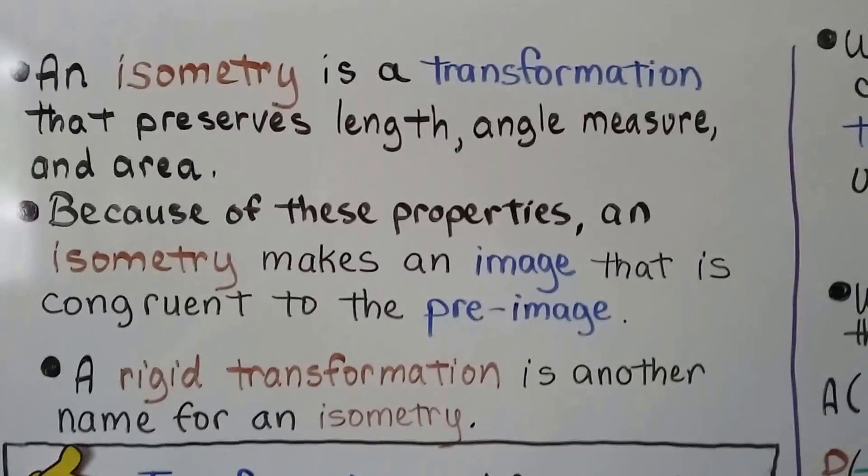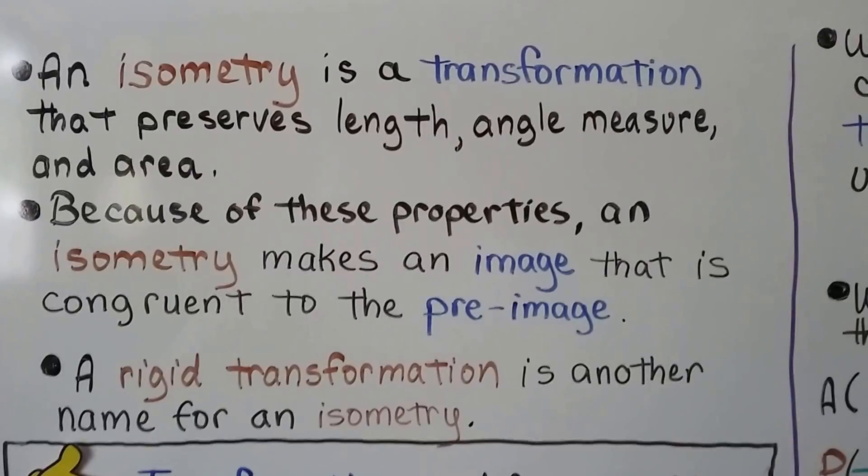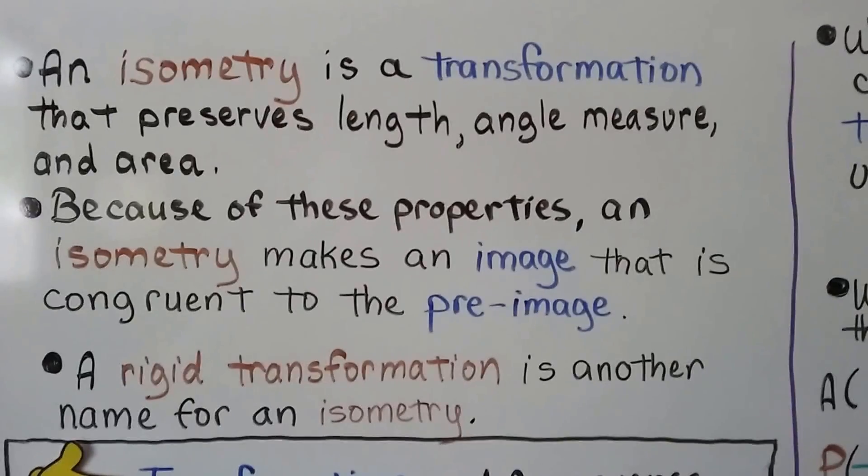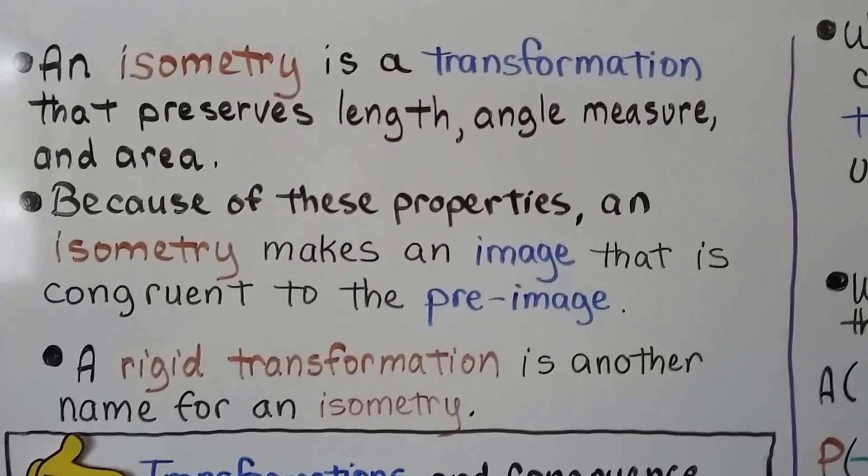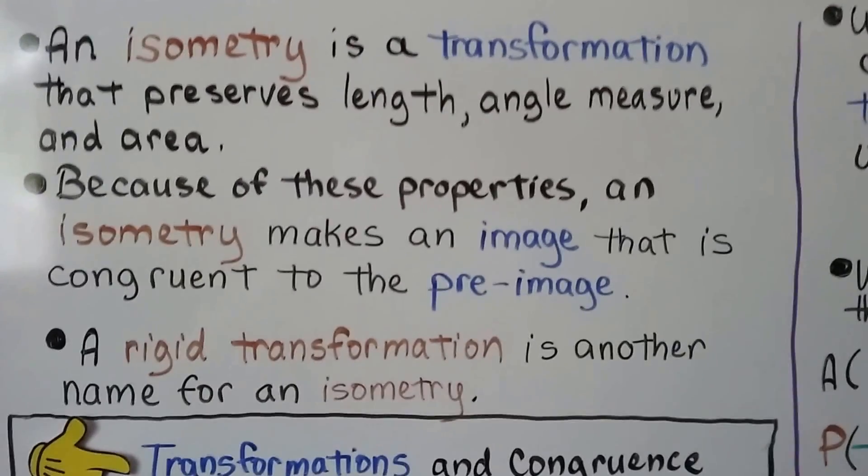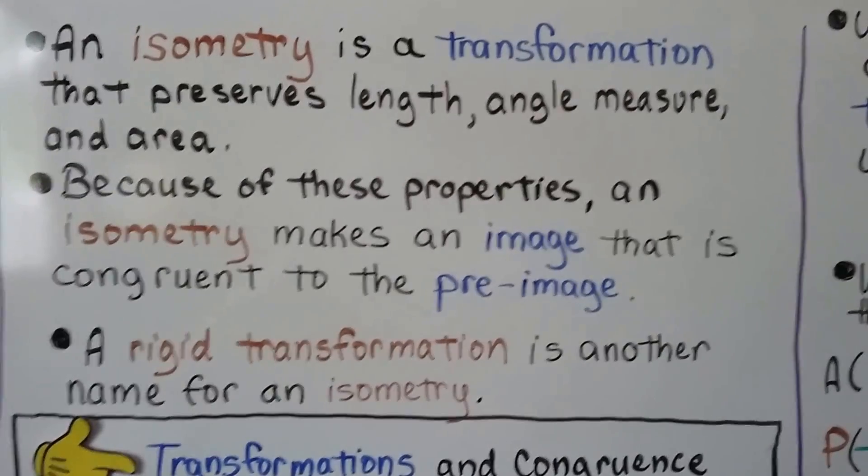An isometry is a transformation that preserves length, angle measure, and area. And because of these properties, an isometry makes an image that is congruent to the preimage. A rigid transformation is another name for an isometry.